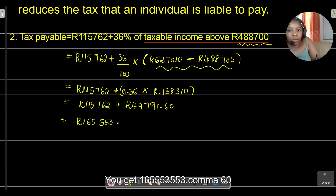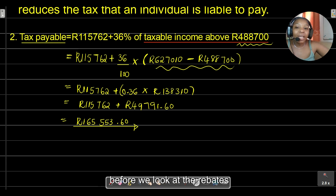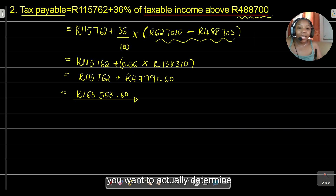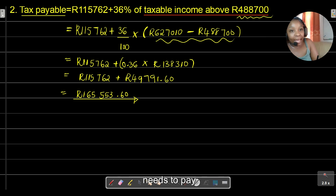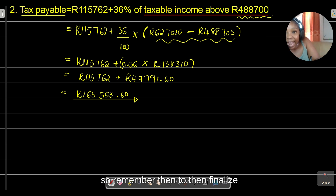Working through the calculation: 0.36 × R138,310 = R49,791.60. Adding that to R115,762 gives us R165,553.60. This is how much Jimmy has to pay in tax before we account for rebates and medical credits. We then divide the annual figure by 12 to get the monthly tax payable.